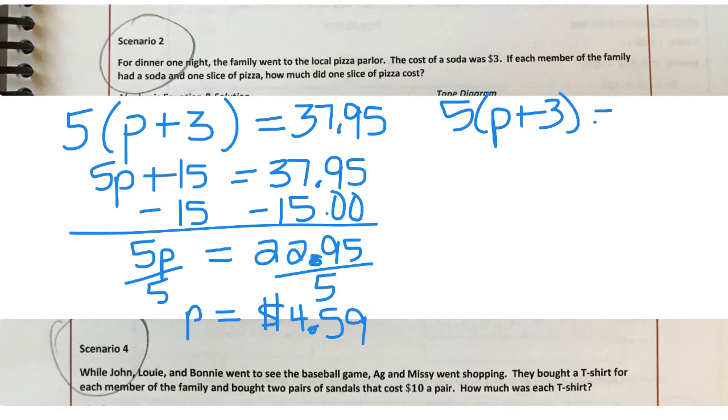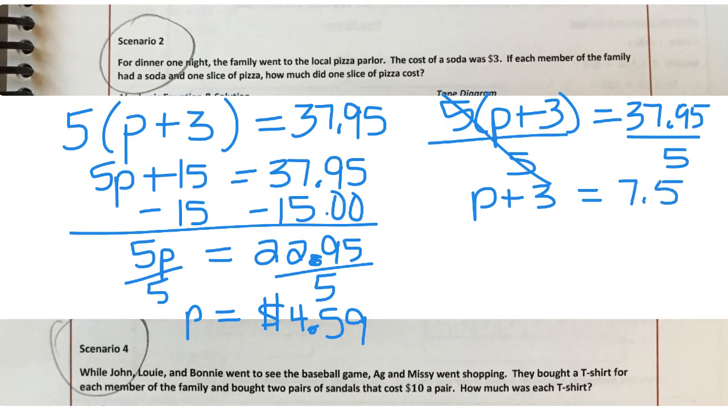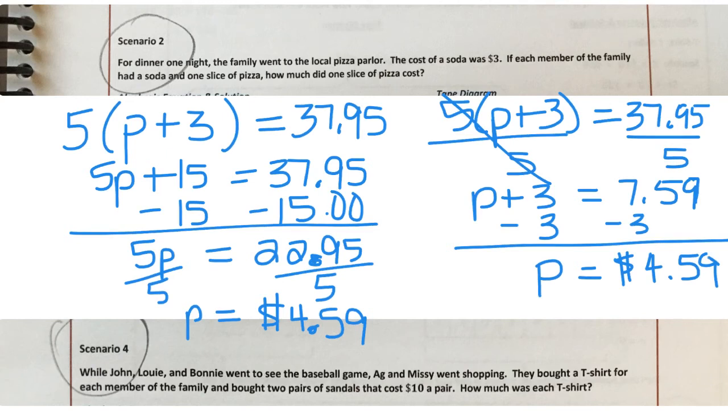Our second strategy that I talked about on the previous page, like I said, it just comes down to personal preference, which strategy you prefer when they have something set up that has the distributive property. I can divide both sides by five. And so I'm left with P plus three equals $7.59. And then I would subtract three from each side. And when I do that, P equals $4.59. Either way, I can check my answer by taking the $4.59, adding it to the $3 for the drink, I get $7.59. And then multiply that by five, and I get the total $37.95.